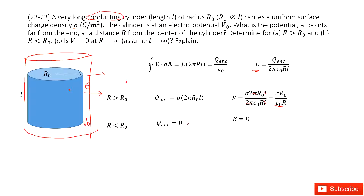Next, for the electric field inside, we draw a Gaussian surface inside the conductor. The enclosed charge is zero, so the electric field inside is zero.